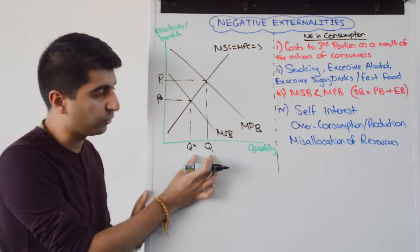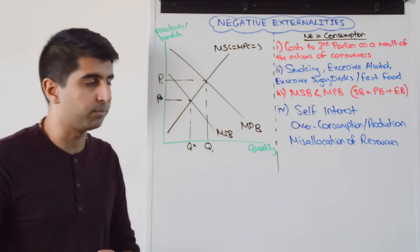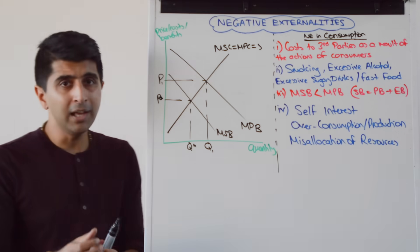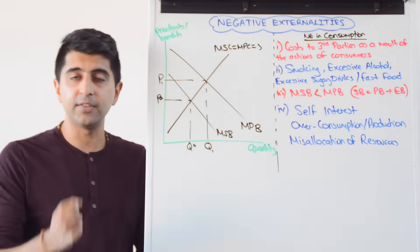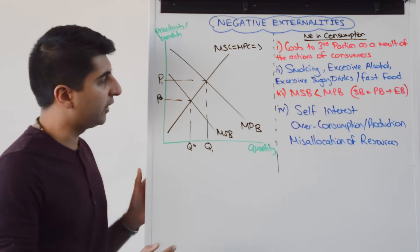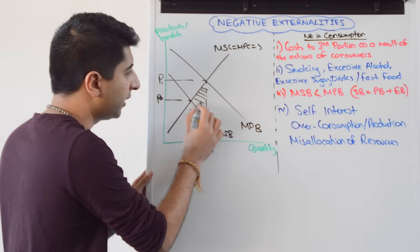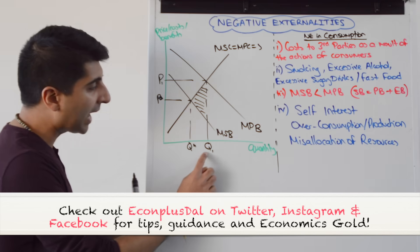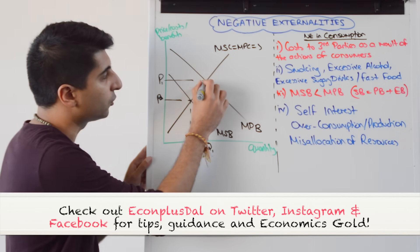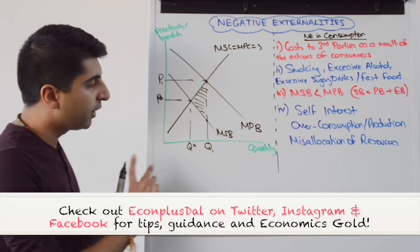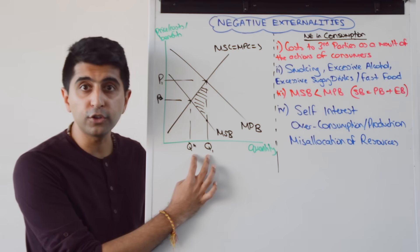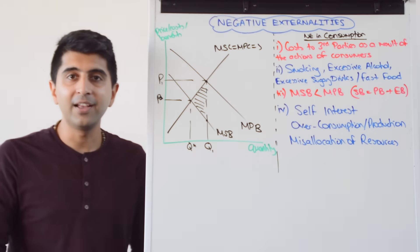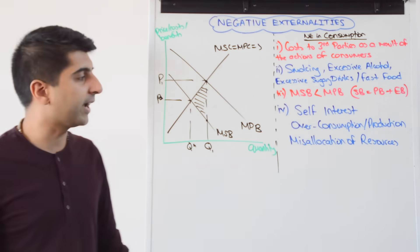We have a misallocation of resources — clearly, too much is being produced, with an over-consumption and therefore an over-production. Again, if there is allocative inefficiency, there is going to be a welfare loss. The welfare loss can be seen here — remember, it's the triangle that points to the social optimum. At Q1, you can see that social cost is up there and social benefit is down there, so all of the units being produced beyond Q star are produced at higher social cost than social benefit. That's clearly a loss to society.